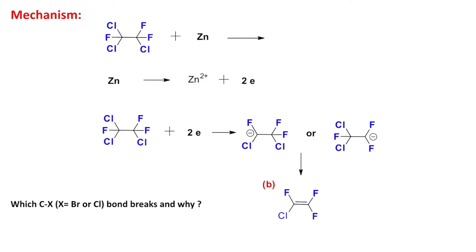First step: zinc releases two electrons and produces Zn²⁺. These two electrons act as reducing agent. Question: which bond will be reduced? Obviously the more polar bond or more reactive bond is expected to reduce. There are three types of bonds available here: one is C-C, one is C-Cl, and one is C-F.